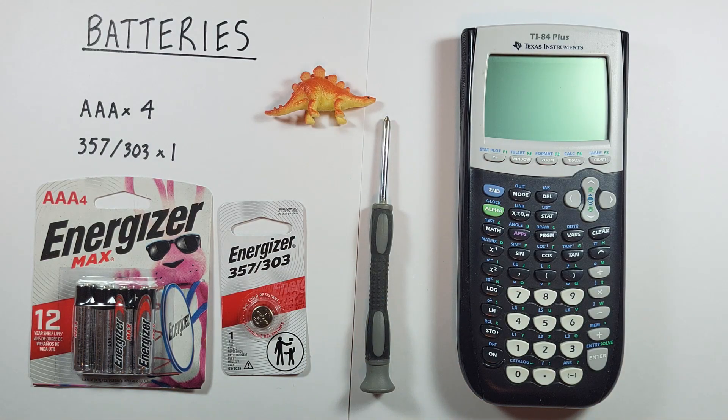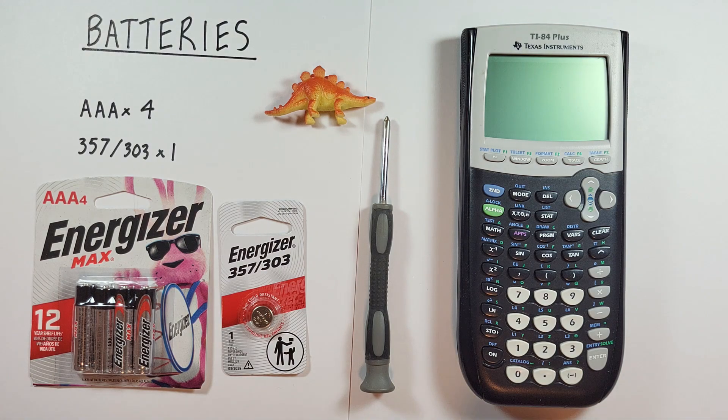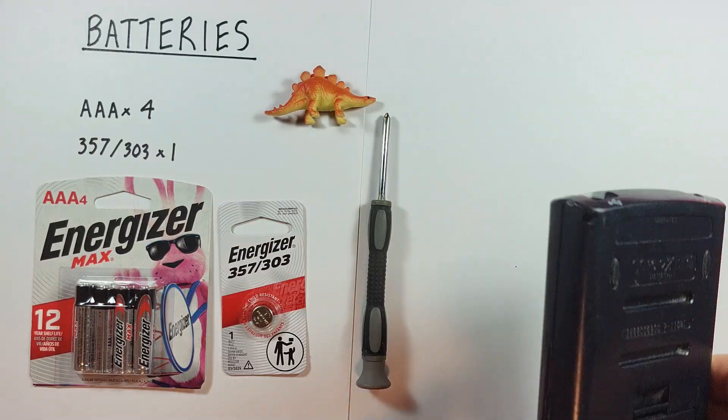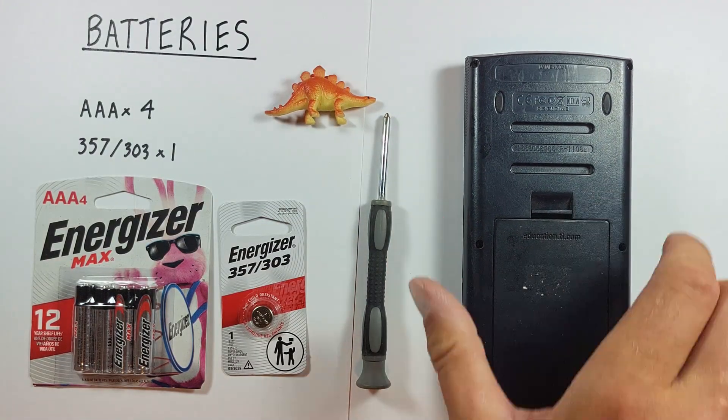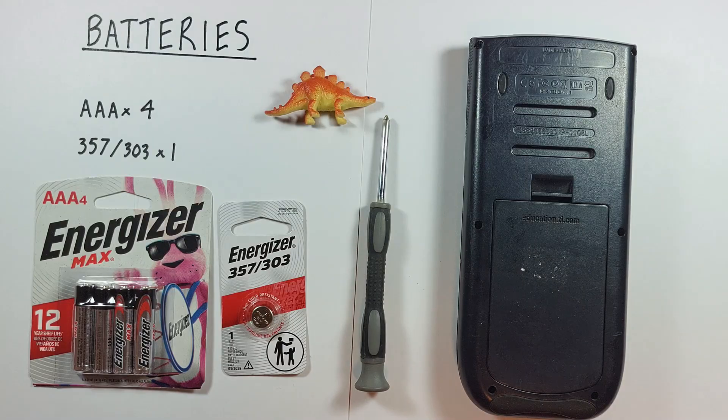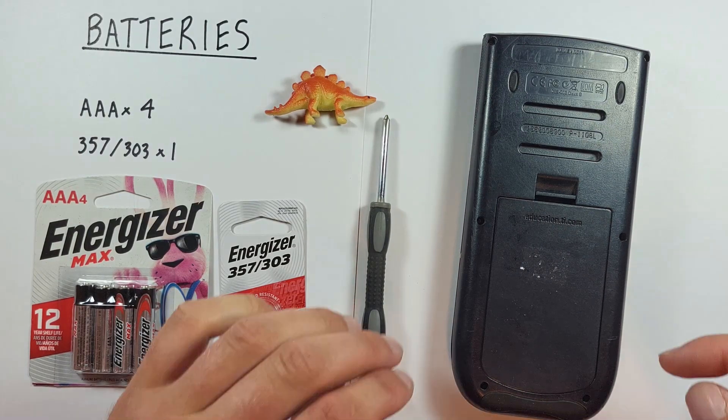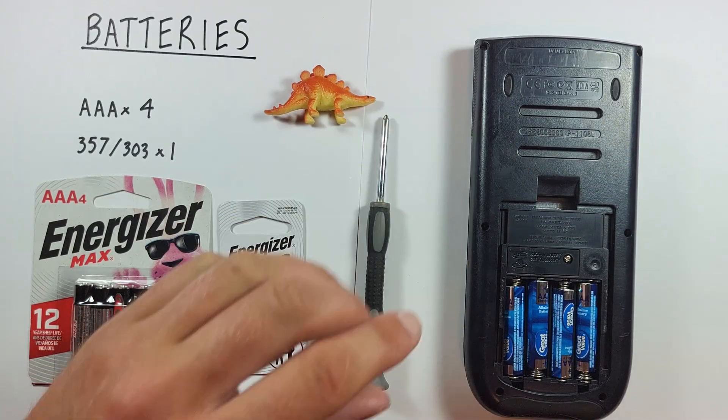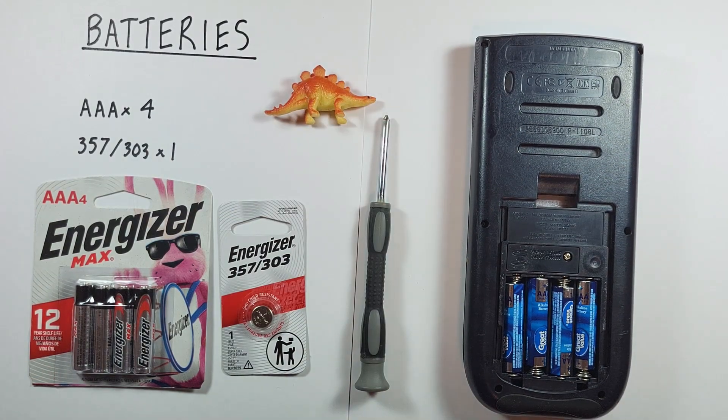Once we have our batteries and screwdriver together we get started by taking our calculator and turning it over so that we see this on the back here. We can open our battery compartment by pulling down and lifting this back plate up. There we go, there's our batteries.